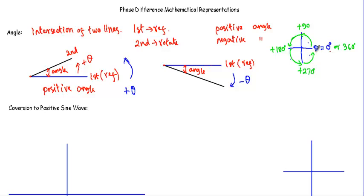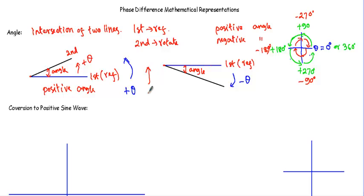If I rotate in the clockwise direction with respect to the reference axis at theta equal to 0, rotating 90 degrees gives minus 90 degrees. Another 90 degrees clockwise gives minus 180 degrees, then minus 270 degrees, and finally minus 360 degrees, which overlaps with the 0-degree axis. So counter-clockwise rotation gives positive angles and clockwise gives negative angles.